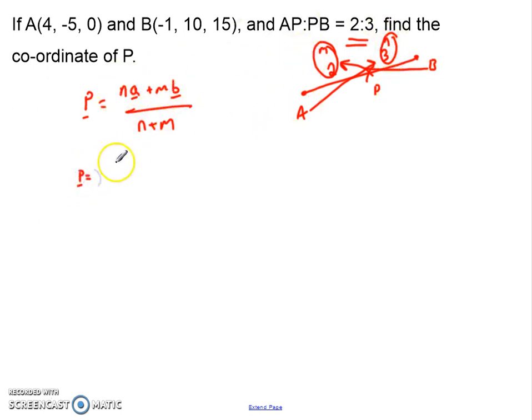So, what I'm able to say is that P equals NA, so 3 times the vector for A, 4, negative 5 and 0, plus MB, so plus 2, which is our M, times the vector for B, negative 1, 10, 15, over the N plus M, which is given by 3 plus 2, which is 5. So, now we've got all these different parts. What we have to do now is just calculate all the different bits we're doing.